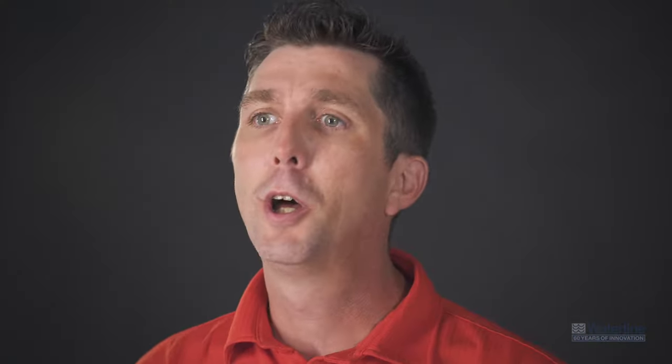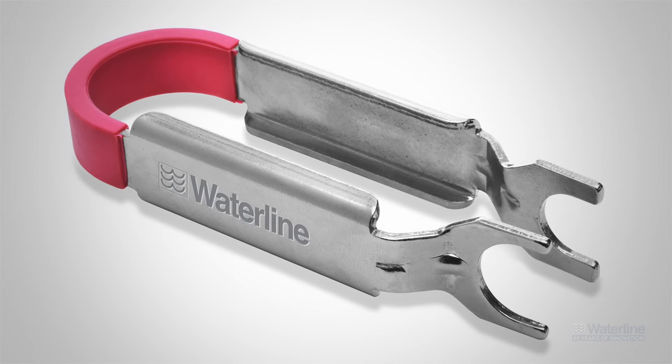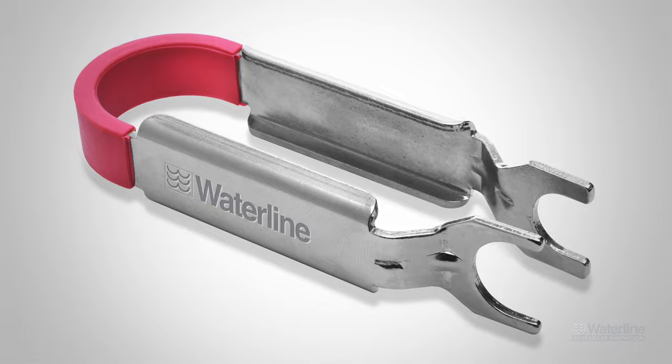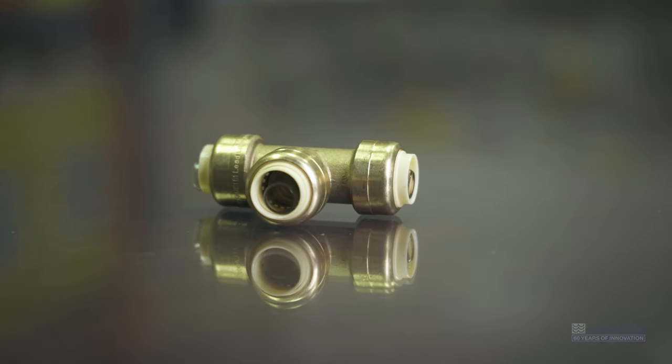To use a disconnect tong, place the tong over the fitting on the pipe. Squeeze the tong to press down on the fittings release collar and pull the pipe out of the fitting. The push and connect push fit fitting is now ready to be reused.